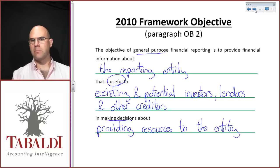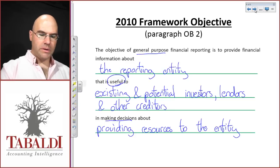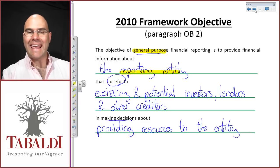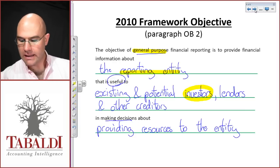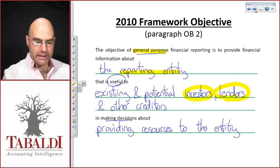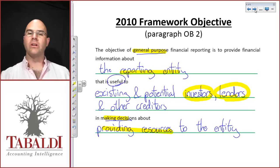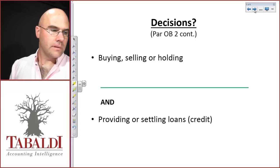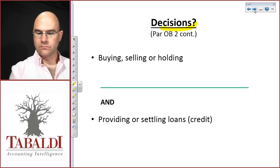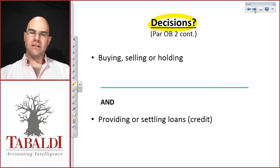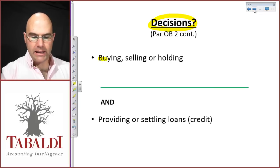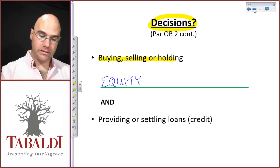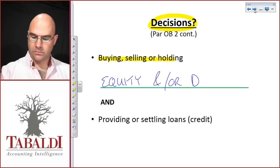To recap: the objective of general purpose financial reporting is to provide information about the reporting entity that is useful to existing and potential investors, lenders, and other creditors in making decisions about whether or not they should provide resources to the entity. Those decisions involve whether to buy, sell, or hold equity and/or debt instruments.